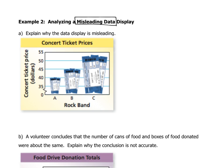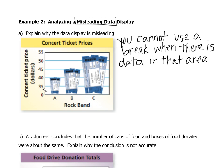In example A, we have to explain why this graph is misleading. There are two real reasons. One is that there's a break right here, which makes it misleading. You cannot use a break when there is data in that area. A break tells your reader there's nothing to look at between 0 and 35, so it skips over to 35. But if you look at the pictures, they start all the way down at 0, so there is information between 0 and 35, which makes the graph misleading.